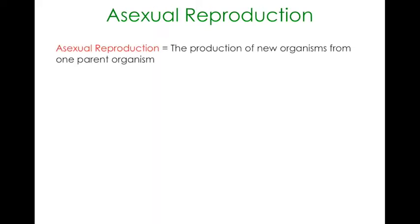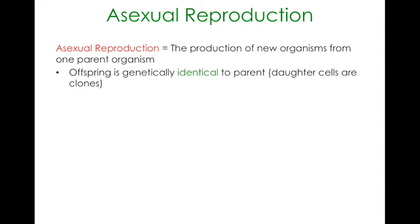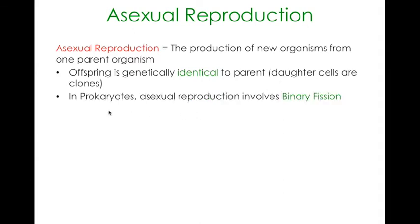So in asexual reproduction, a new organism is produced from only one parent organism. There is only one parent organism involved in the reproduction of a new organism. What happens is the offspring is not any different — it's genetically identical to the parent. We call the new cells or the clones the daughter cells or daughter clones of the parent. In prokaryotes, organisms that don't have a nucleus like bacteria and archaea, they can reproduce asexually through a process called binary fission — we've already talked about that in the previous chapter.